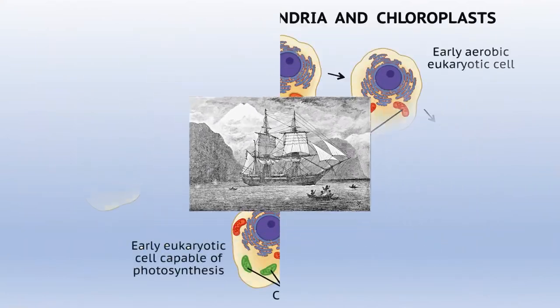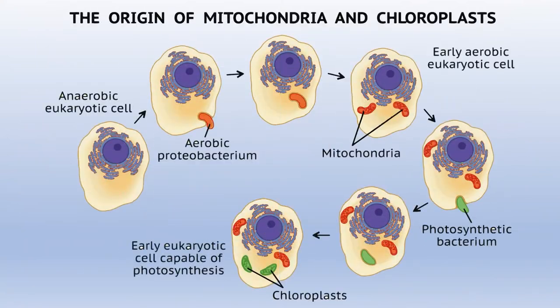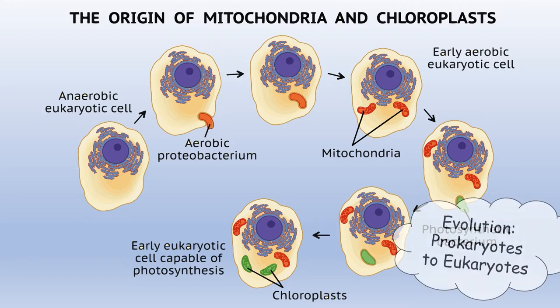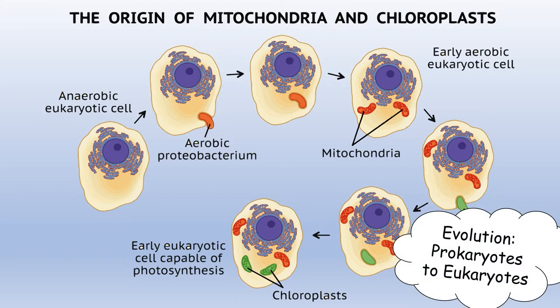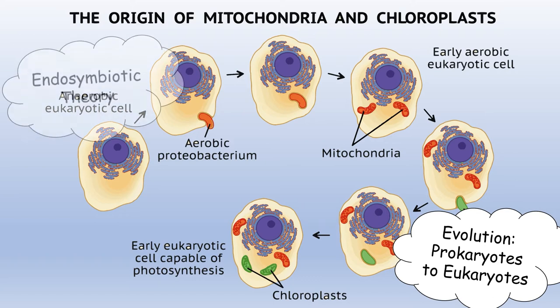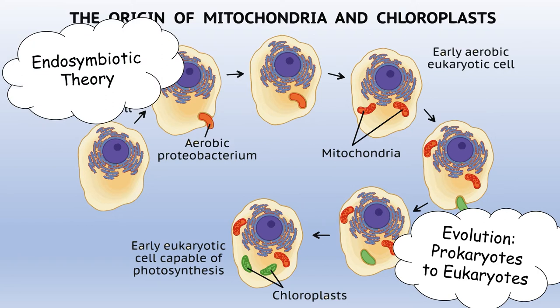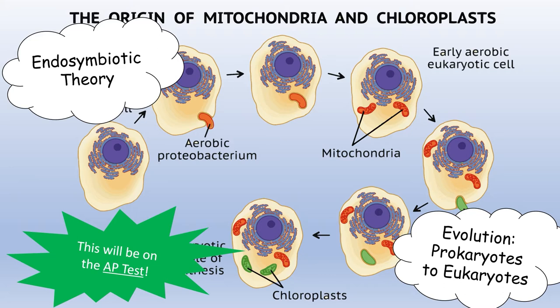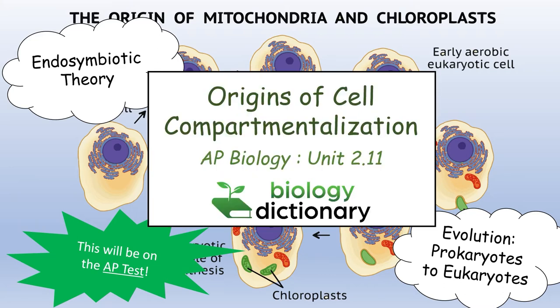Now, using advanced microscopy, genetic science, and centuries of careful observation, we can easily connect the dots between humans and single-celled organisms. This video covers the very beginning of that story, when cells first started to become compartmentalized and carry out complex functions. This is known as the endosymbiotic theory, and the concepts from this theory will certainly be on the AP test. So stick with us as we cover everything you need to know about the origins of cell compartmentalization.